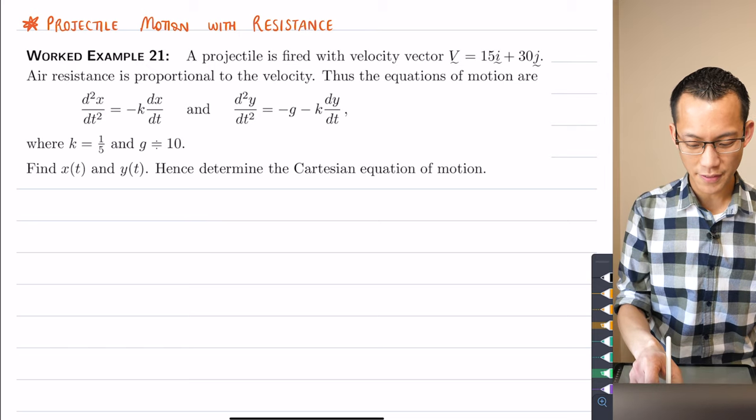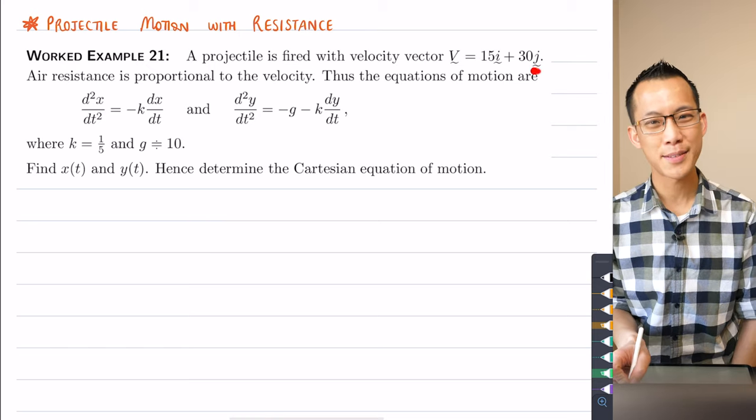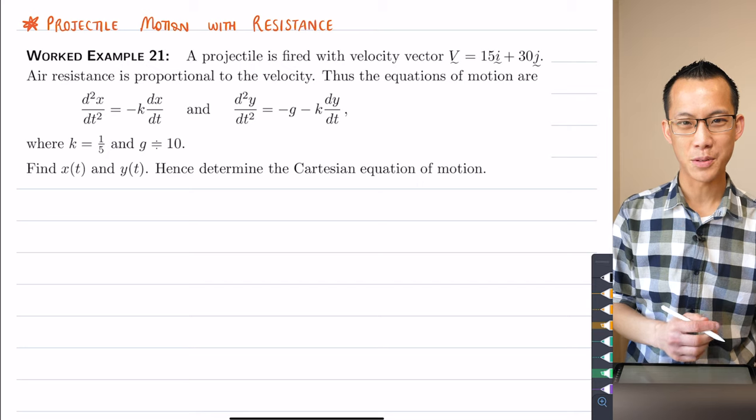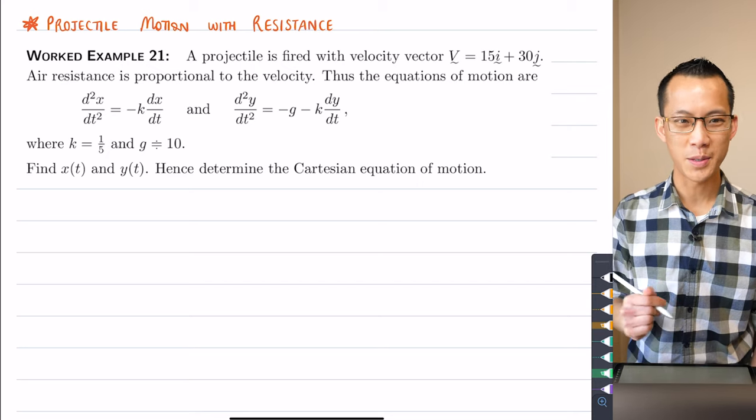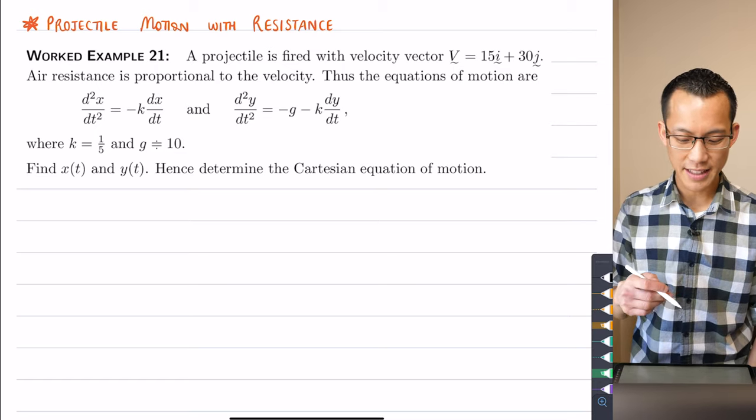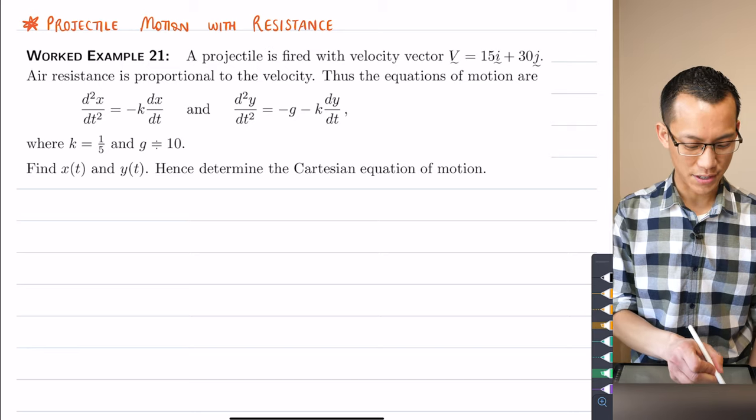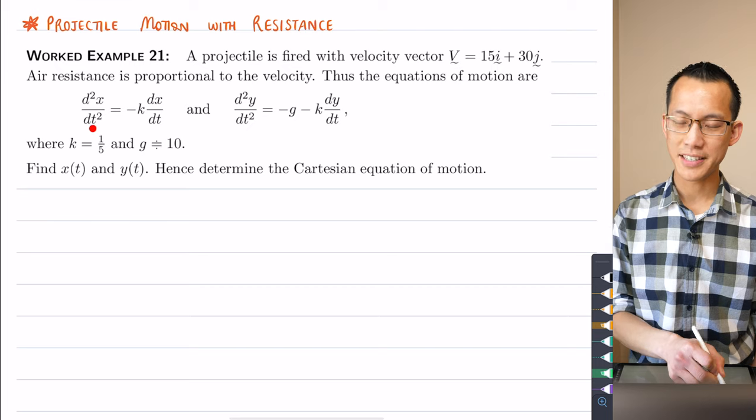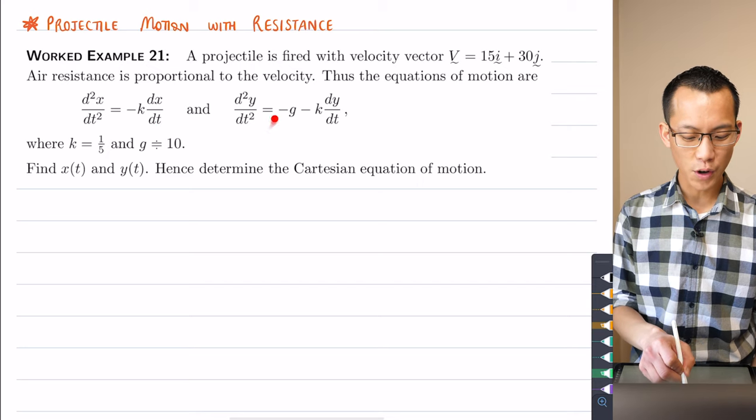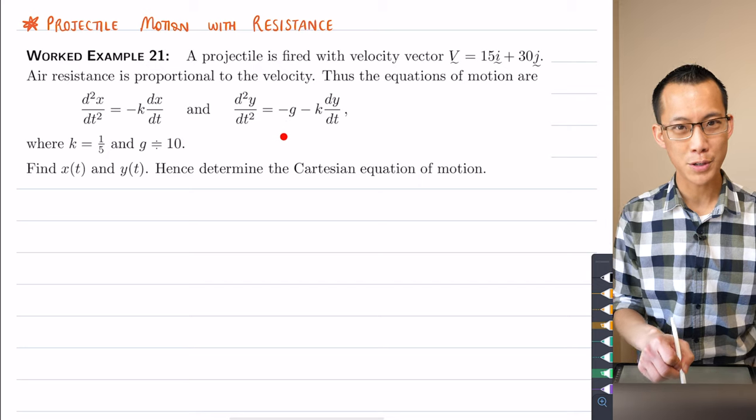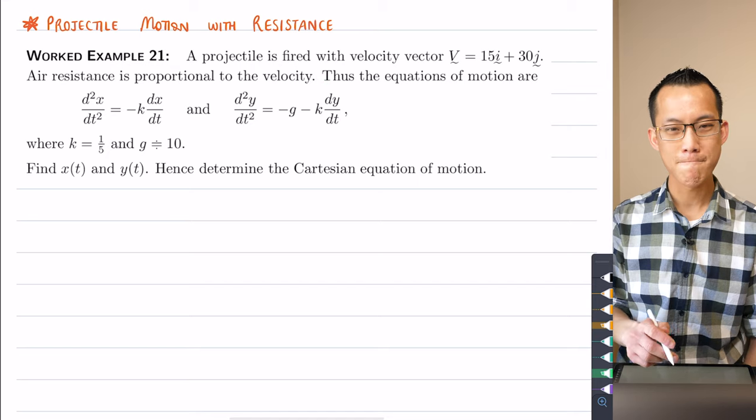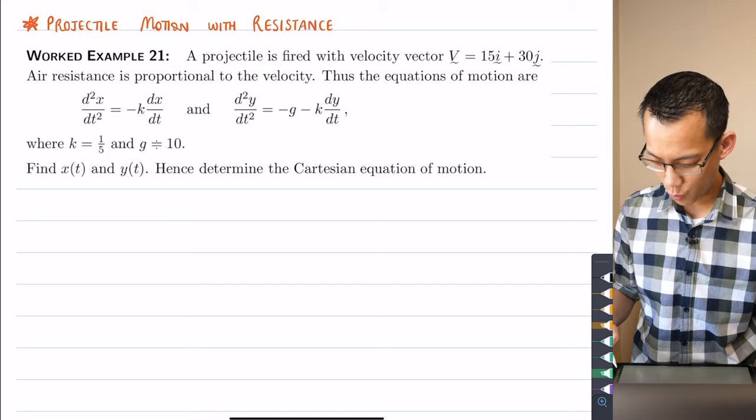You can see, I've got this example we're going to work through together this afternoon, and then there are some questions we're going to work through, which I just think are amazing that we can understand these complex physical systems using the differential and integral calculus you've learned over the last two years. A projectile is fired with velocity vector V equals, and then you've got this particular format. We're using vector notation to indicate the horizontal and vertical components. That's the i and the j, which are our unit vectors across and upward. Air resistance is proportional to the velocity, and they give us, as a result, the equations of motion.